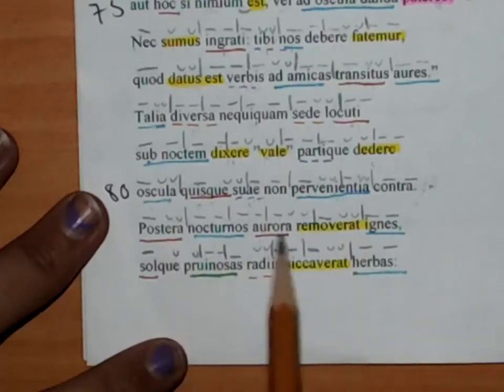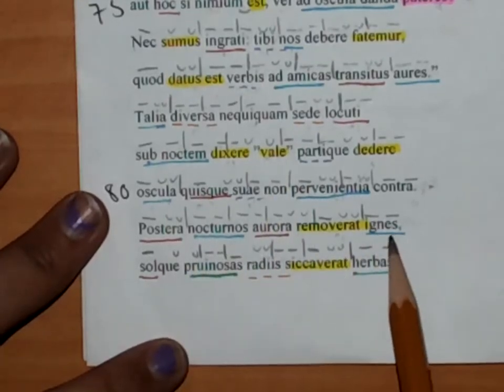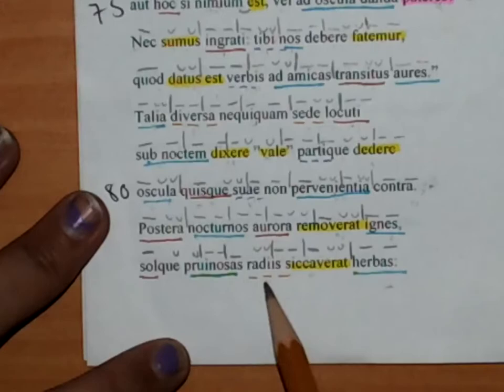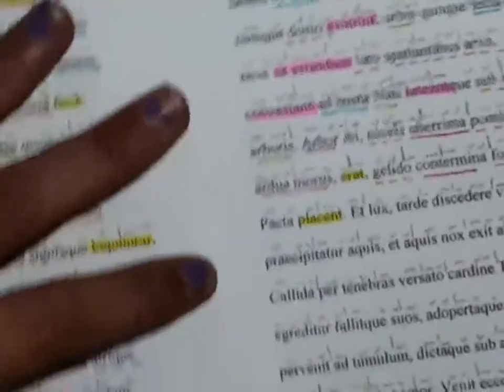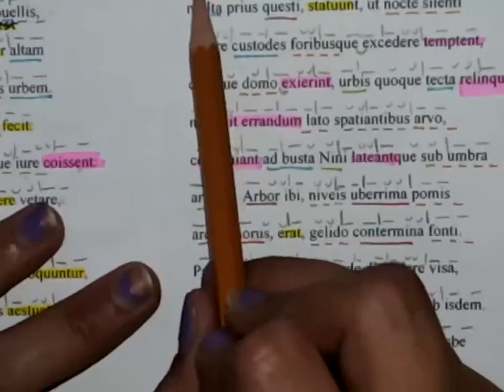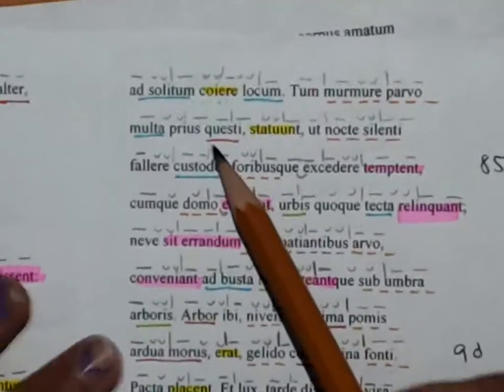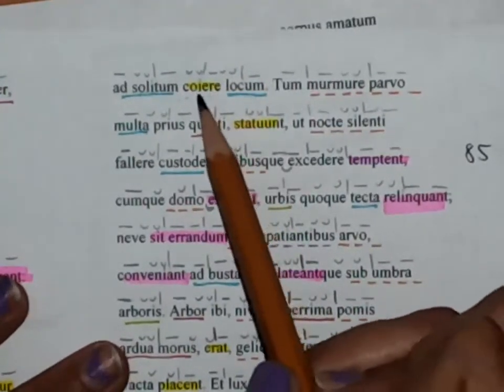The following dawn had removed the nocturnal fires—those are stars—and the sun had dried the frosty grass by means of its rays. They came to the accustomed location, they went together to the accustomed location.